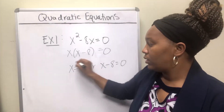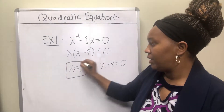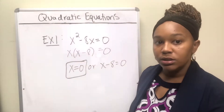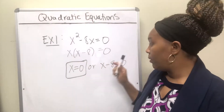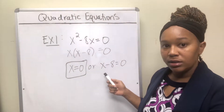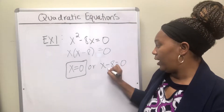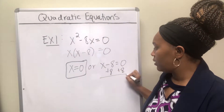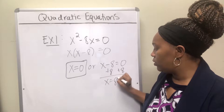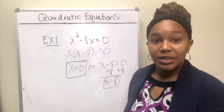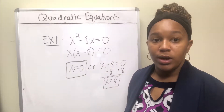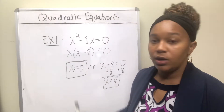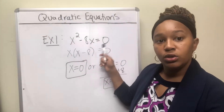Here, x is already solved: x equals zero. So if x is zero, then the whole thing will equal zero. For the second factor, we solve x minus 8 equals zero by adding 8 to both sides, and we get x equal to 8. So either x is zero or x is 8 — either one of those numbers will make the original equation true.